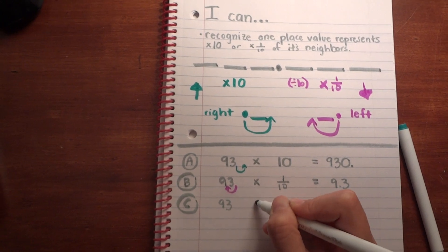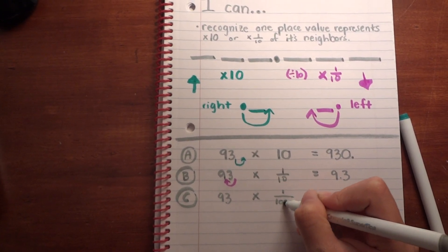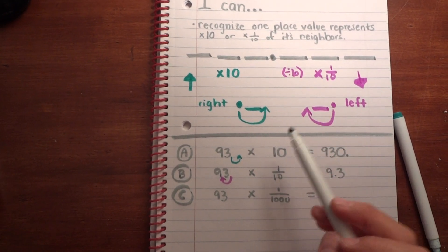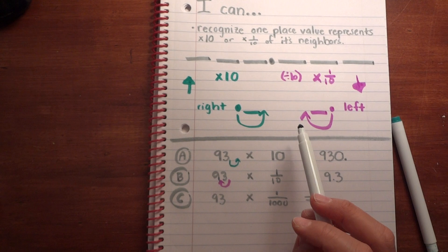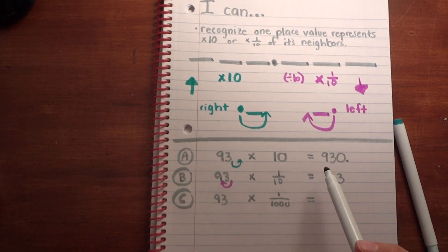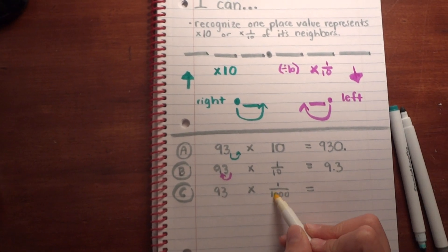Last one: start with 93 again, but this time we're multiplying by one-thousandth. Now, each one we've done so far was moving it over one place value because it's either times 10 or divide by 10. This time it's one-thousandth. We're in luck because the base 10 system is really cool—each place value is times 10.